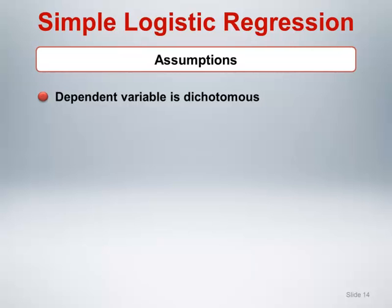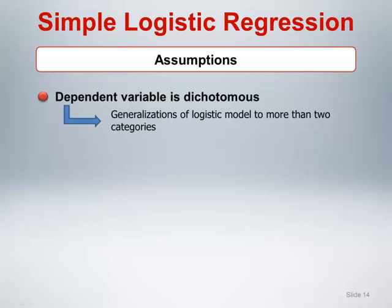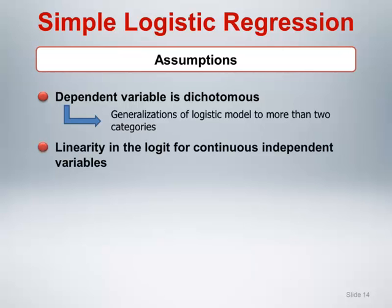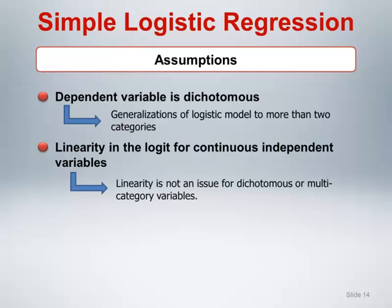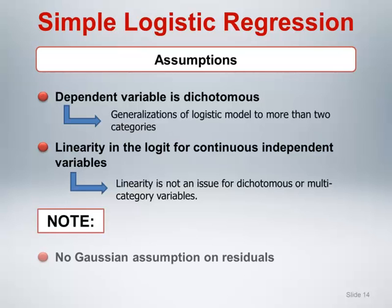Let's discuss the assumptions of simple logistic regression. First, the dependent variable is dichotomous. Note that there are generalizations of the logistic model to more than two categories, but discussion of this is beyond the scope of this course. We assume linearity in the logit for continuous independent variables. The challenge with this assumption is that most software packages don't provide an assessment of this assumption automatically, as is usually done with linearity in the case of linear regression. Linearity is not an issue for dichotomous or multi-category variables. Lastly, there are no Gaussian assumptions on the distribution of the residuals in logistic regression, unlike linear regression.